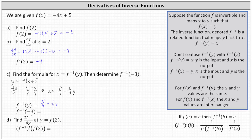Now we're asked to determine f inverse of negative three. We learned in part a that f of two equals negative three, and therefore f inverse of y should map negative three back to positive two. We substitute negative three for y in f inverse of y, which gives us five-fourths minus one-fourth times negative three, which is equal to five-fourths plus three-fourths, which is eight-fourths, and eight-fourths is equal to two.